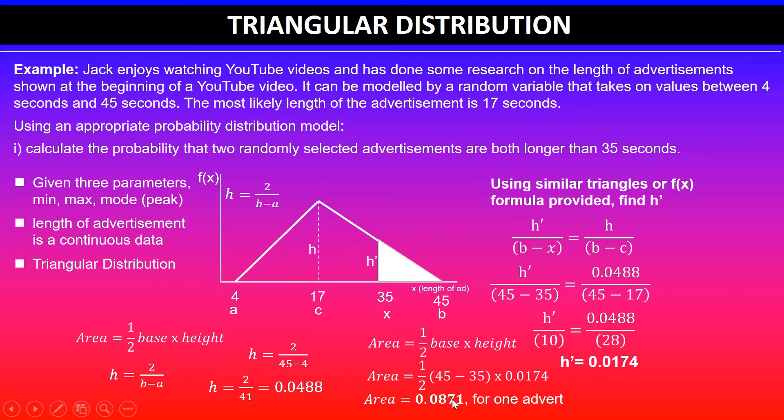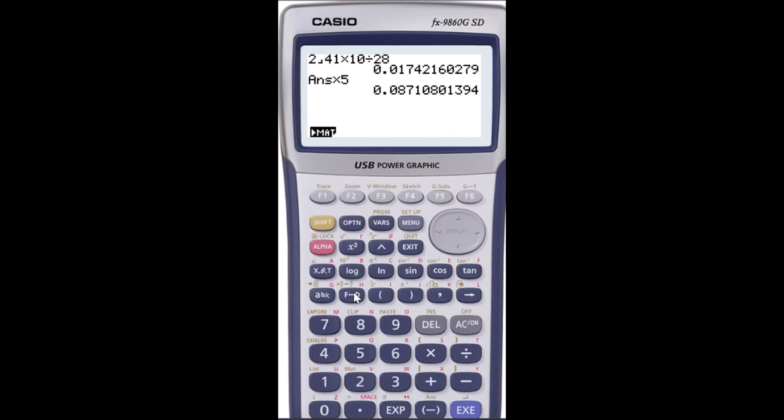Remember this is for one advertisement, but if you look at the question it says calculate the probability that two randomly selected advertisements, so two. This is for one, so I will need to square this, multiplying by itself.